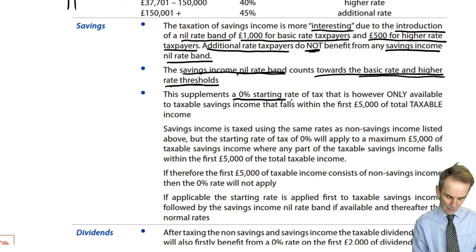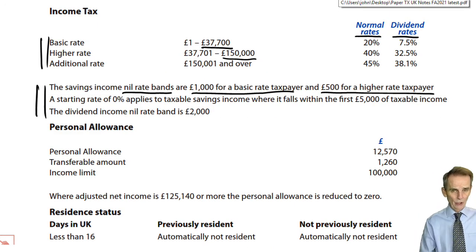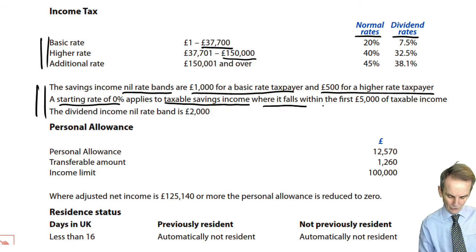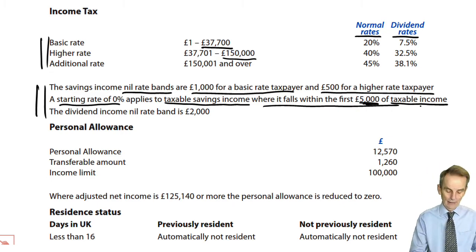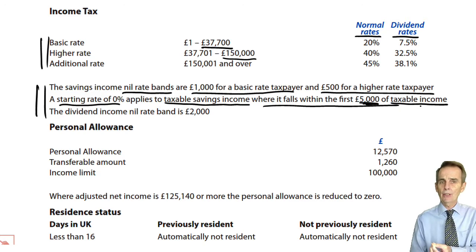In addition to the nil rate band, there is a 0% starting rate of tax available to taxable savings income that falls within the first £5,000 of taxable income. This is given to you on the rates and allowances page. Students often find it tricky to combine the potential double act of a 0% starting rate and the savings income nil rate band — we'll illustrate that with examples.